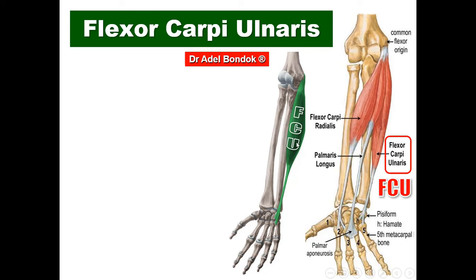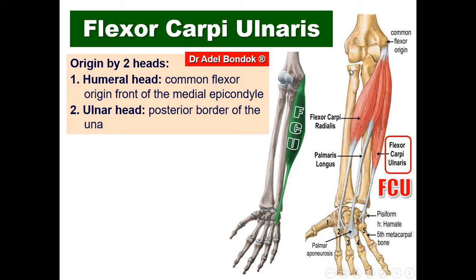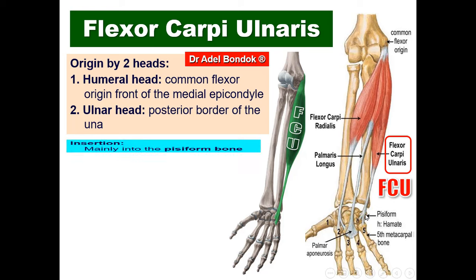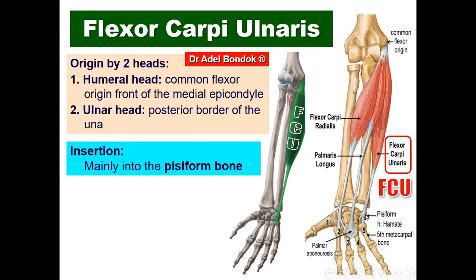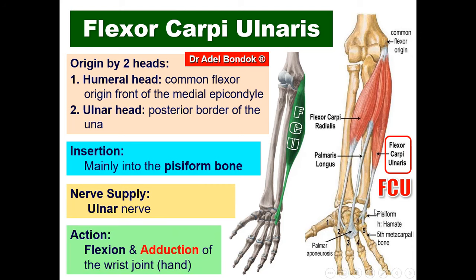Flexor carpi ulnaris: origin — humeral head from the common flexor origin (front of the medial epicondyle), and ulnar head from the posterior border of the ulna. The ulnar nerve passes between the two heads. Insertion: mainly into the pisiform bone, with additional insertion into the hamate and the fifth metacarpal bone. Nerve supply: the ulnar nerve — this is the exception. Action: flexion of the wrist and adduction of the wrist.